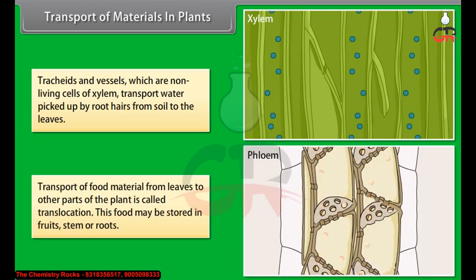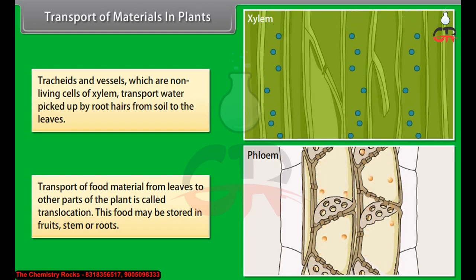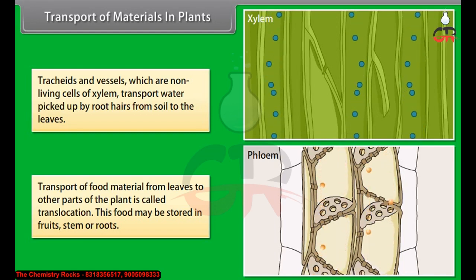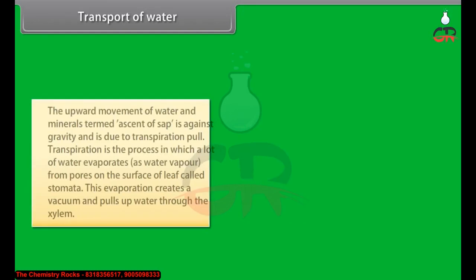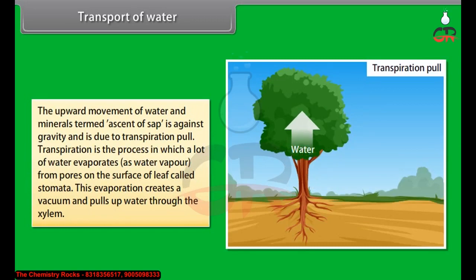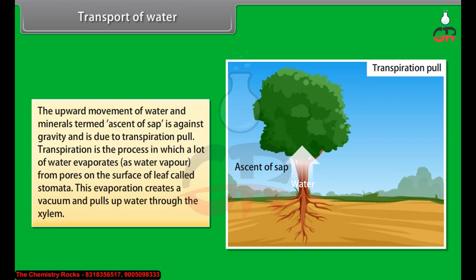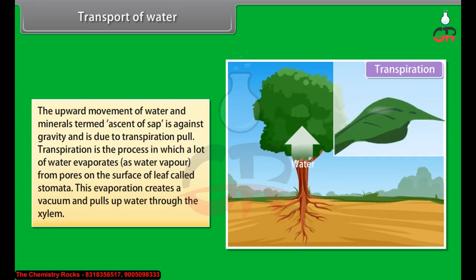The upward movement of water and minerals, termed the ascent of sap, is against gravity and is due to transpiration pull. Transpiration is the process by which a large amount of water evaporates as water vapor from pores on the surface of the leaf called stomata. This evaporation creates a vacuum and pulls water up through the xylem.